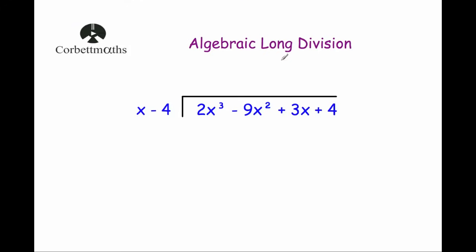It's very important you've got room beneath the bus shelter. Our first step: divide 2x cubed by x, which gives 2x squared — write that above. Now multiply both terms of the divisor by 2x squared: 2x squared times x is 2x cubed, and 2x squared times minus 4 is minus 8x squared. Now we subtract.